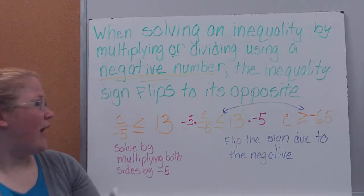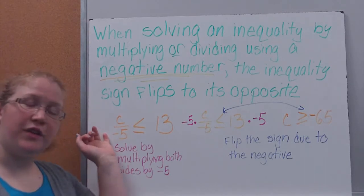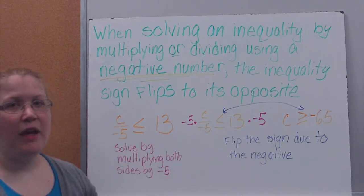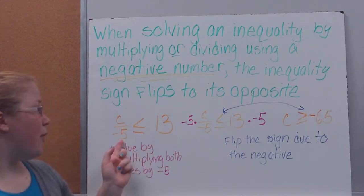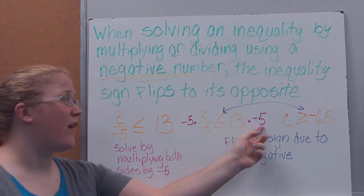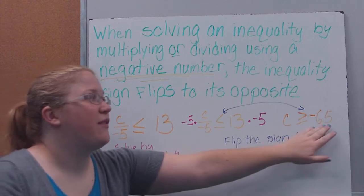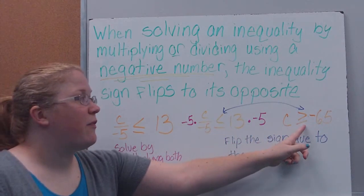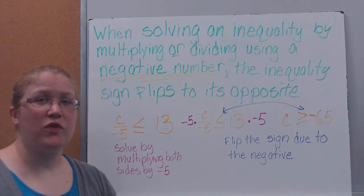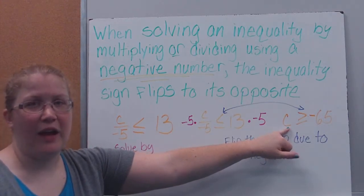Here's an example: I have c divided by negative 5. Remember, the inverse operation for division is multiplication. So I have c divided by negative 5 is less than or equal to 13. To get c by itself, I'm going to multiply both sides by negative 5. The negative 5s cancel, leaving c. 13 times negative 5 is negative 65, but I need to flip-flop my sign because of the negative, giving me c greater than or equal to negative 65.